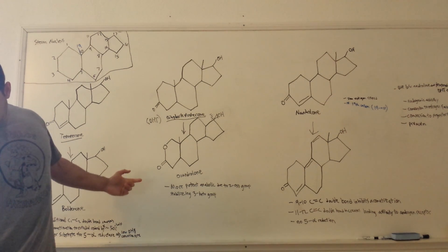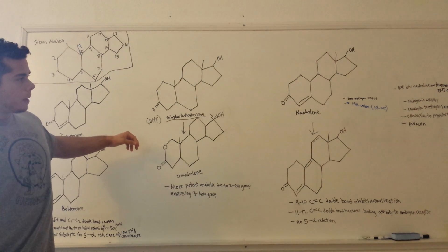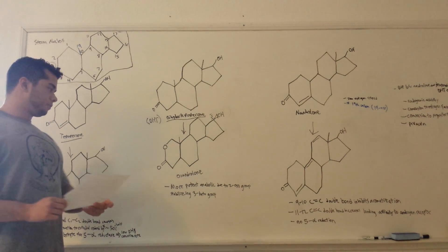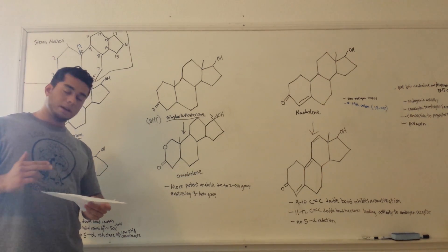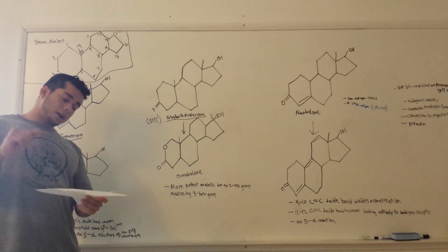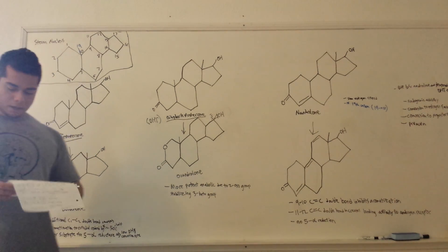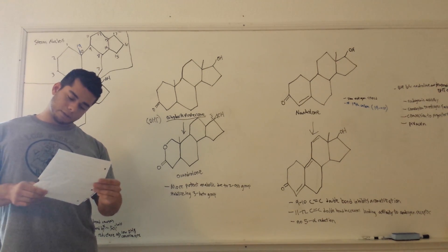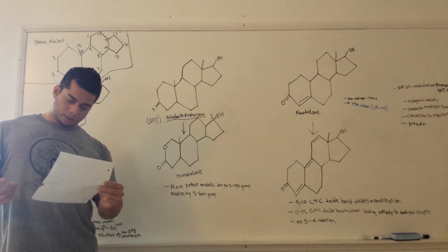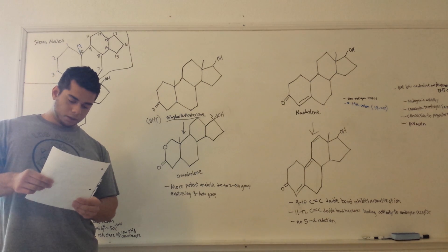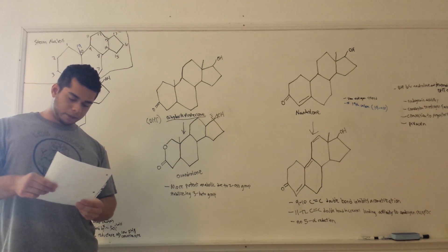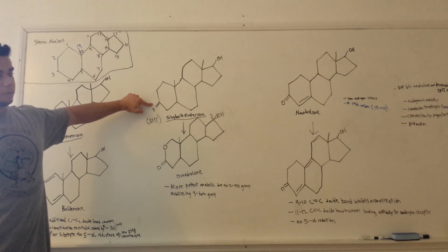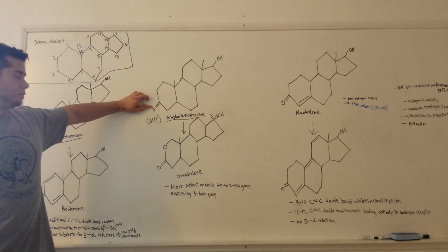So to summarize the DHT section: we covered why DHT is a poor anabolic — it doesn't necessarily get the chance to bind to the androgen receptor before being reduced by the 3α-hydroxysteroid dehydrogenase enzyme. We also covered why DHT derivatives have specific functional groups — it's to prevent that inactivation. The lack of the C4-5 double bond makes the C3 keto group more susceptible to being converted to an alcohol.